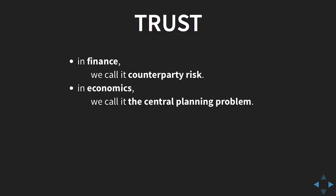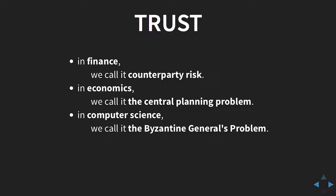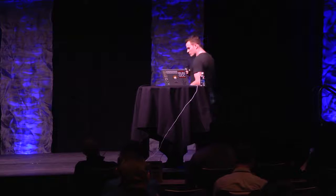In finance, we call it counterparty risk — those of you who work in financial services are familiar with this. In economics, we call it the central planning problem: the further away the decision-maker gets from the individual constituents, the less effective their decision-making capacity is. In computer science, we call it the Byzantine generals problem — you have a cluster of nodes, a set of servers or machines responsible for doing some work, and you don't know which of those servers has been compromised, which machine has had a bit flipped or has a corrupt hard drive.